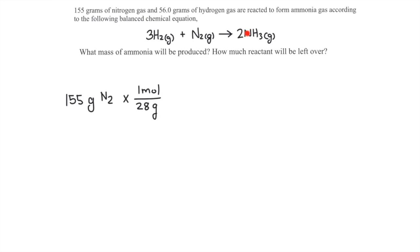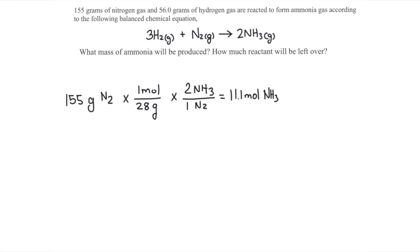The mole ratio that compares ammonia gas to nitrogen gas is 2 to 1 — there will be twice the amount of ammonia compared to nitrogen gas based on the chemical equation. 155 divided by 28 times 2 over 1 gives 11.1 moles of ammonia gas. Since the question asks for the answer in mass, we convert 11.1 moles of ammonia gas into grams by multiplying by the molar mass of ammonia, which is 17, giving us 188 grams.